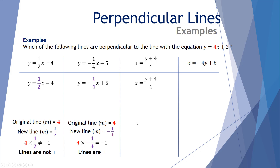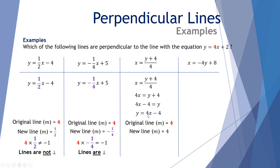Third example: x equals y plus 4 over 4. Not in standard form, so let's transpose. Multiply both sides by 4, then subtract 4 from both sides to get y equals 4x take 4. The original line has gradient 4 and this new line also has gradient 4. Multiplying 4 by 4 gives 16, not negative 1 — so these lines are not perpendicular.